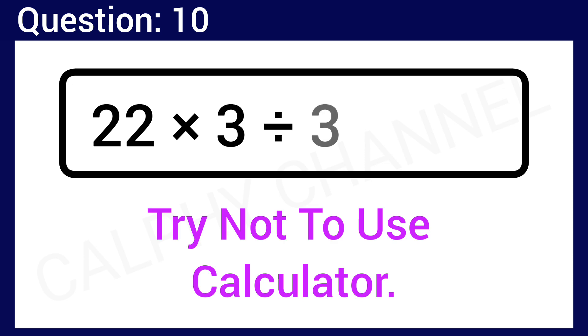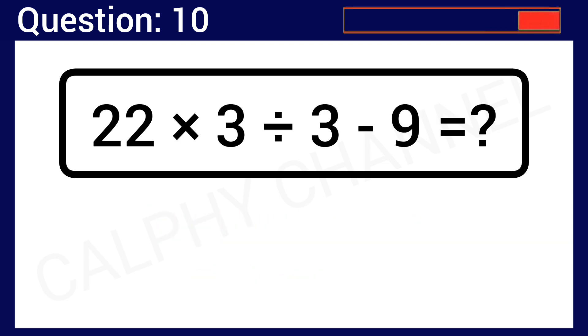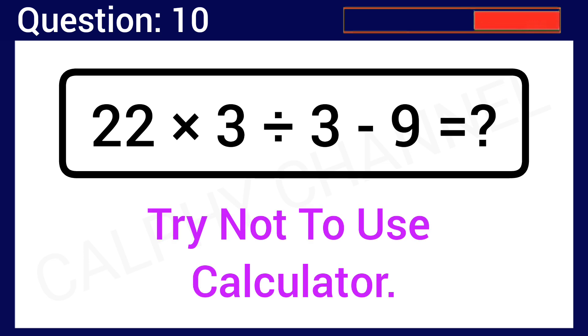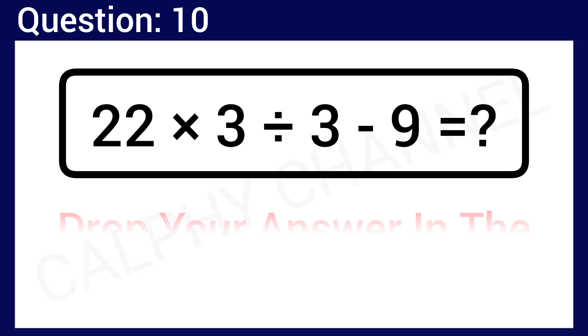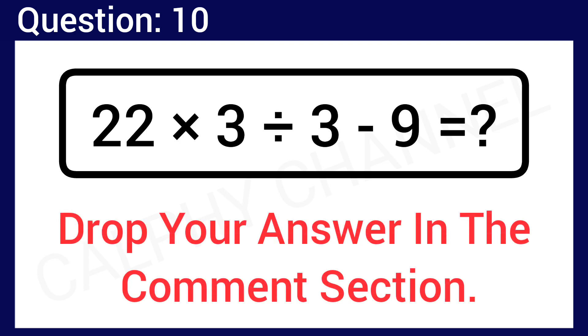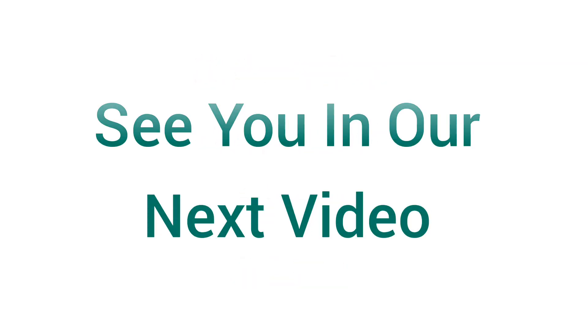Question number 10: 22 times 3 divided by 3 minus 9 is equal to what? Drop the correct answer in the comment section below. Please note: don't use a calculator to solve this. Thanks very much for watching this video — subscribe, comment, share, and like. See you in the next one.